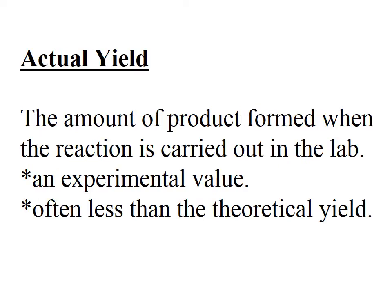Actual yield, however, is what we measure in the lab — what we obtain, the mass that we obtain. It is going to be less than your theoretical value, or sometimes equal to, but it should never be more than your theoretical value. So your actual yield should be less than or equal to, but not more than your theoretical value. And again, it's an experimental value — the amount of product that you measure, whether it's in volume, grams, whatever we measure it in.